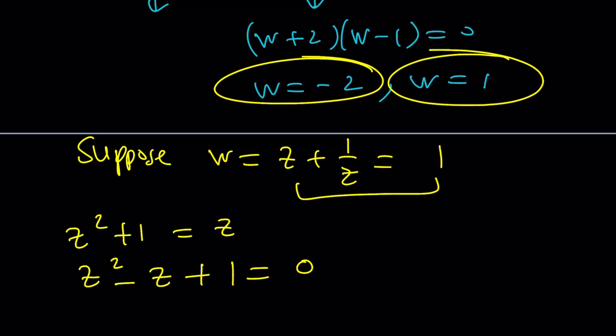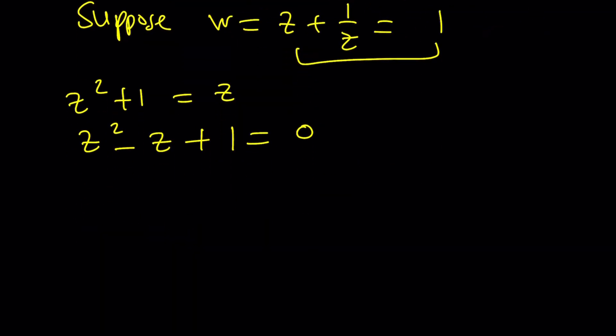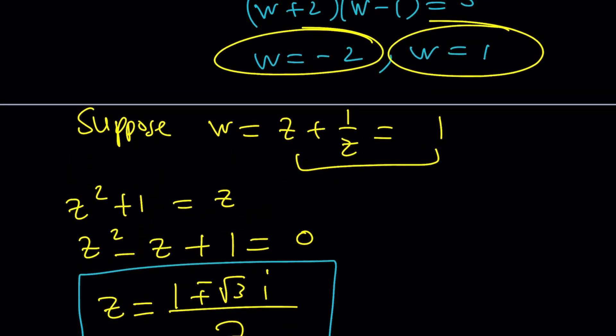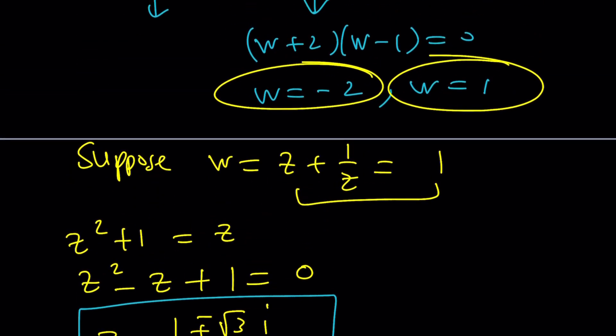Now, what do you get from here? Well, this is going to have non-real solutions. If you consider the quadratic formula, 1 plus minus the square root of 3i all over 2. That's going to be the z values based on our assumption.